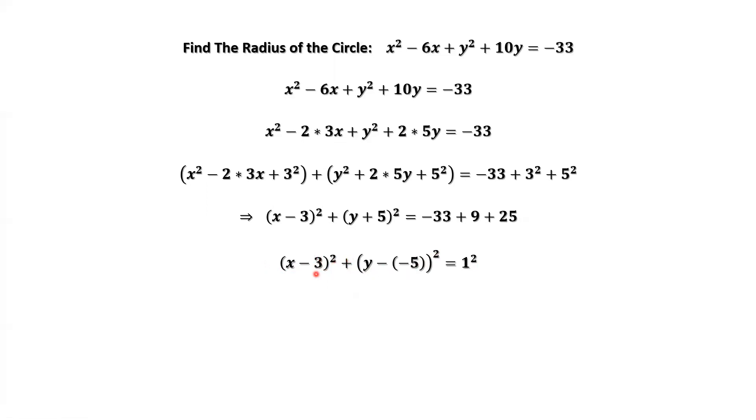h equals 3, k equals negative 5, r equals 1. The center is at 3, negative 5. The radius equals 1. That's all. Thanks for watching and see you next time.